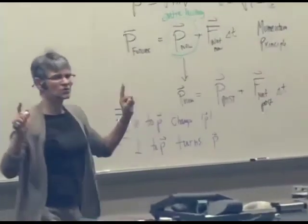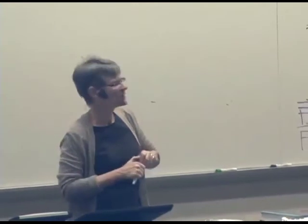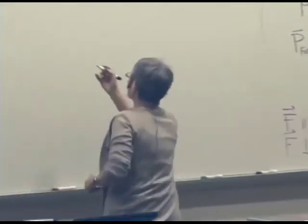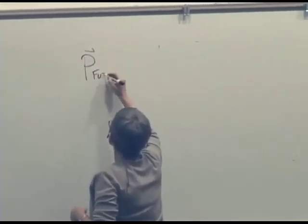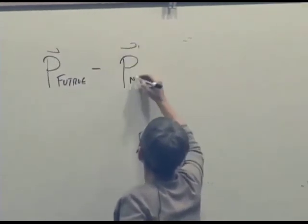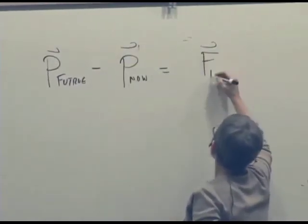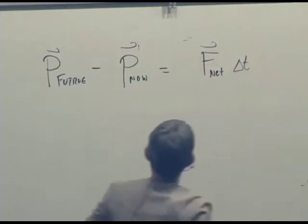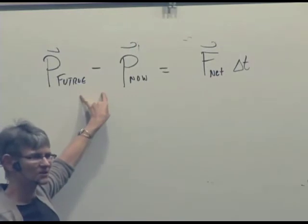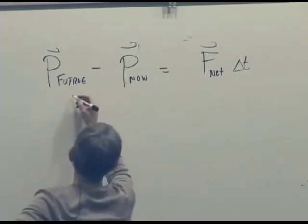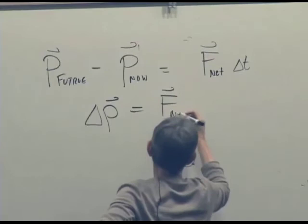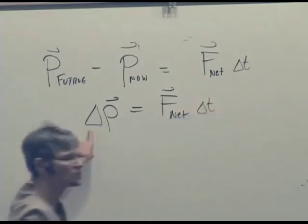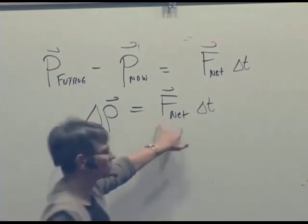We can make this more precise by rewriting this equation in the following way. We can take the momentum principle and we can say P_future minus P_now is F_net*Δt. Well, this is our old friend ΔP, isn't it? This is a change in momentum. So if this is final and that's initial, we can write this as ΔP is F_net*Δt. The change in momentum over some time Δt is equal to the net impulse.